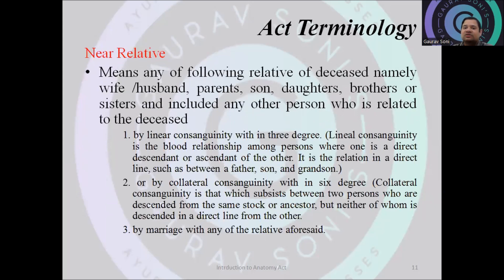A near relative includes wife, husband, parents, son, daughter, and brothers, as well as any other person related to the deceased. Two special legal terms are used: lineal consanguinity, which means a blood relationship where one person is a direct descendant or ascendant of the other, such as father, son, and grandson; and collateral consanguinity, which means a blood relationship between two persons descended from the same ancestor but neither of whom is directly descended from the other. Relatives by marriage can also be considered near relatives.